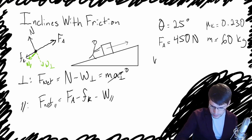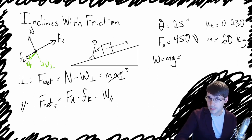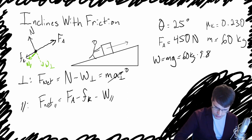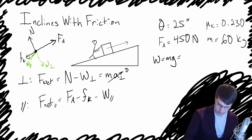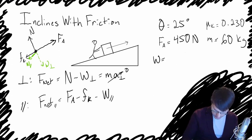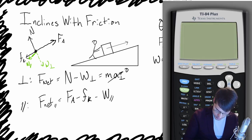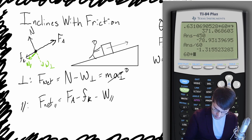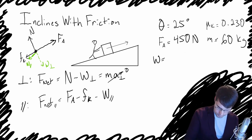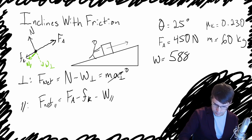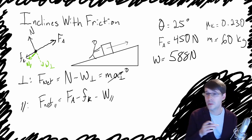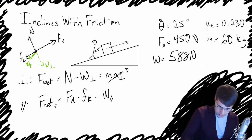First thing we're going to do is find the weight, which is equal to mg. For this object, that's 60 kilograms times 9.8 meters per second squared. We calculate that: 60 times 9.8 gives us 588 newtons. That's the straight-down weight. Now we need the parallel and perpendicular components of the weight, so let's find those now.